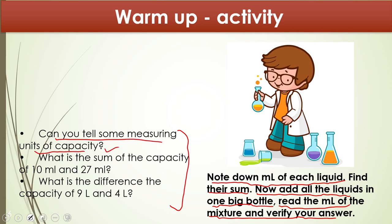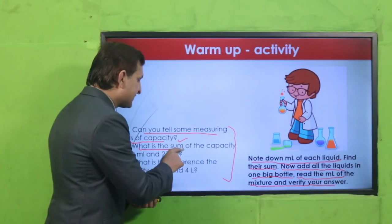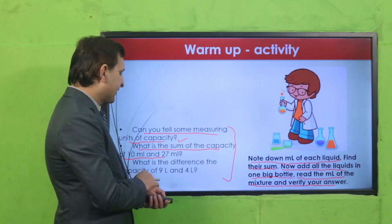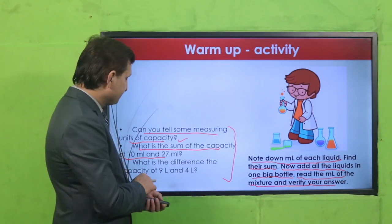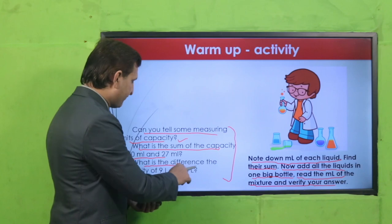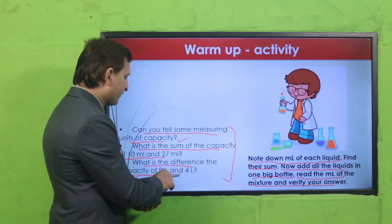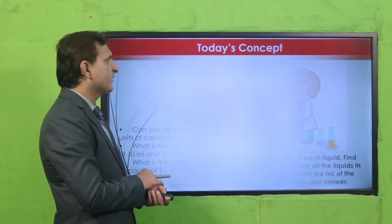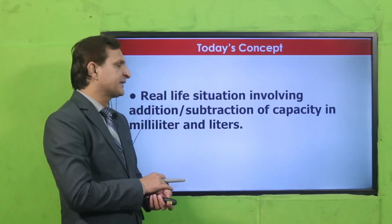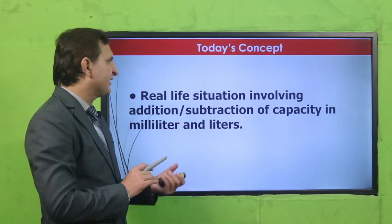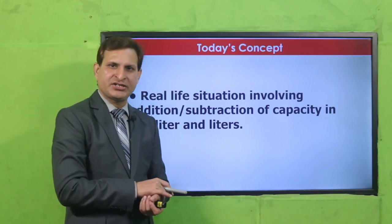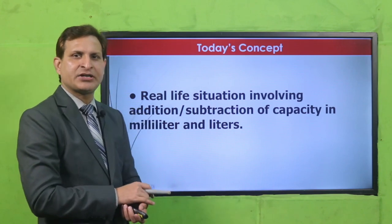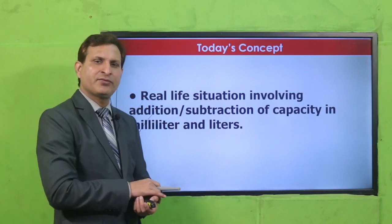Can you tell some measuring units of capacity that we saw in the previous lesson? What is the sum of the capacity of 10 milliliters and 27 milliliters? And what is the difference of the capacity of 9 liters and 4 liters? Do it quickly. Now let's move to the main concepts — real life situations involving addition and subtraction.